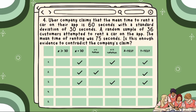Number 4: Uber Company claims that the mean time to rent a car on their app is 60 seconds with a standard deviation of 30 seconds. A random sample of 36 customers attempted to rent a car on the app. The mean time of renting was 75 seconds. Is this enough evidence to contradict the company's claim? Answer: Our N is 36 which is greater than 30. The sample standard deviation is known based on the given. Based on the given situation, the test statistic that we are going to apply is the T-test.